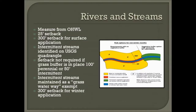Setbacks are not required if there's a grass buffer in place. For a perennial stream — one that flows all the time — a 100-foot buffer of grass means you do not need setbacks. For an intermittent stream — one that only flows during rainfall or storm events — a 50-foot buffer is required. Intermittent streams maintained as grass waterways are exempt from any setback requirements.